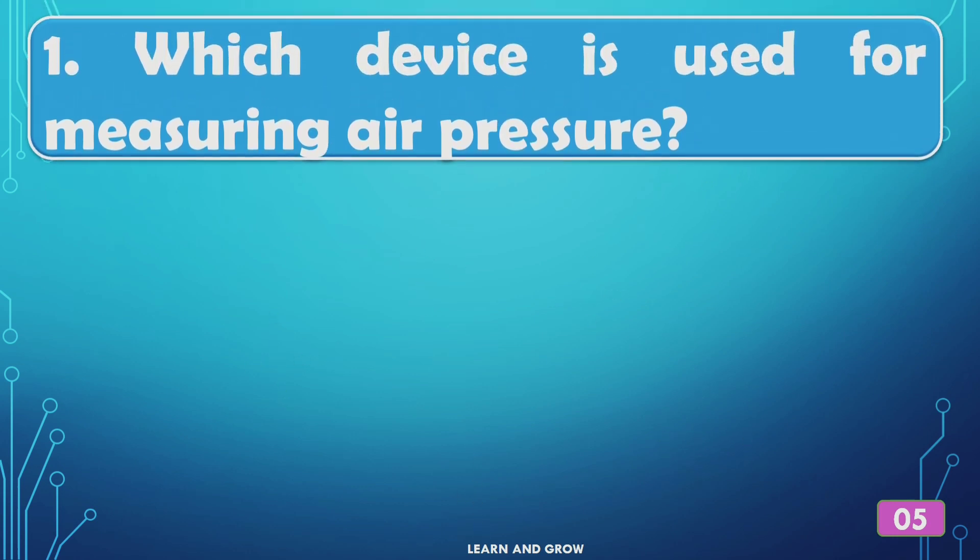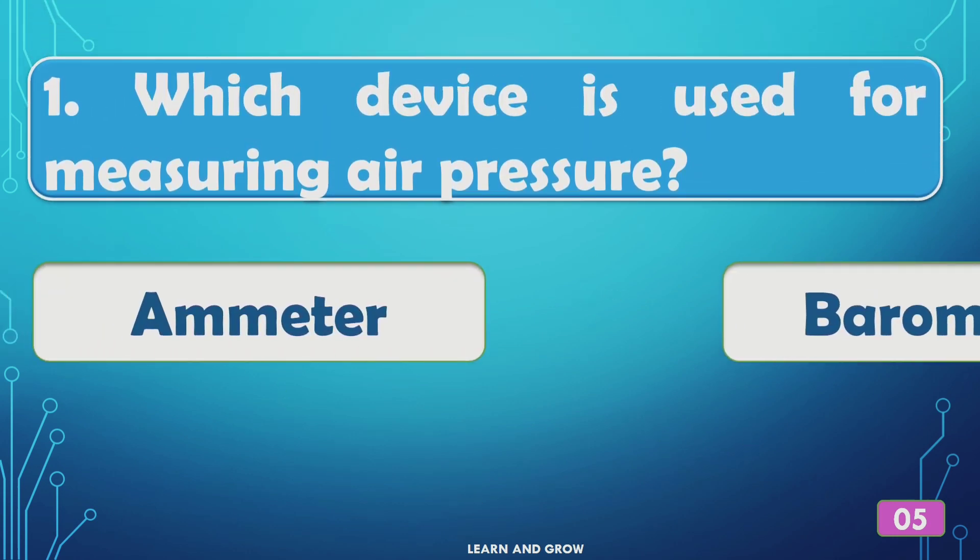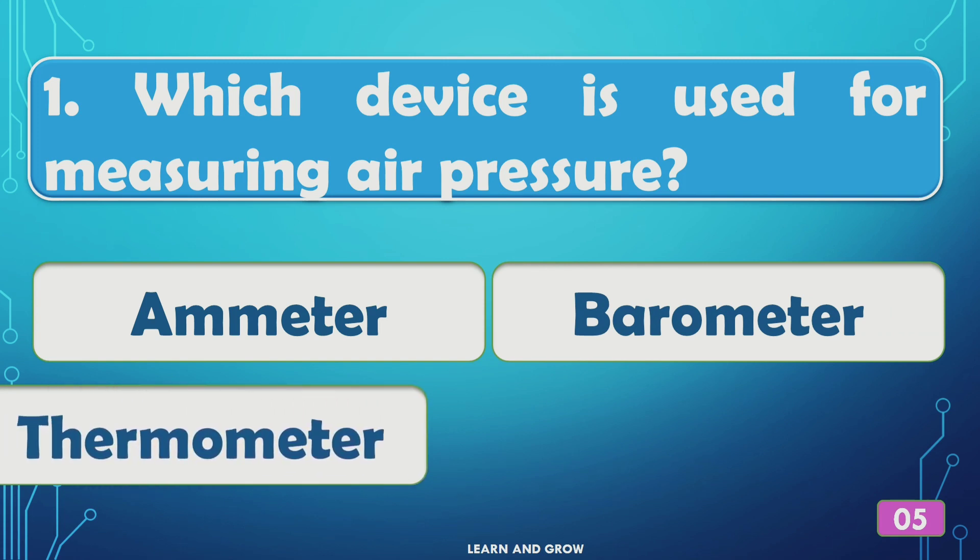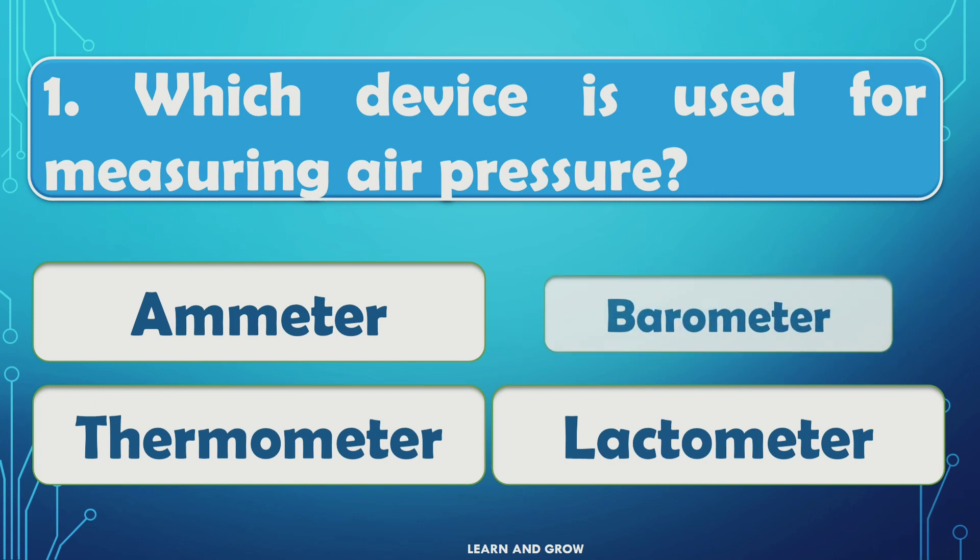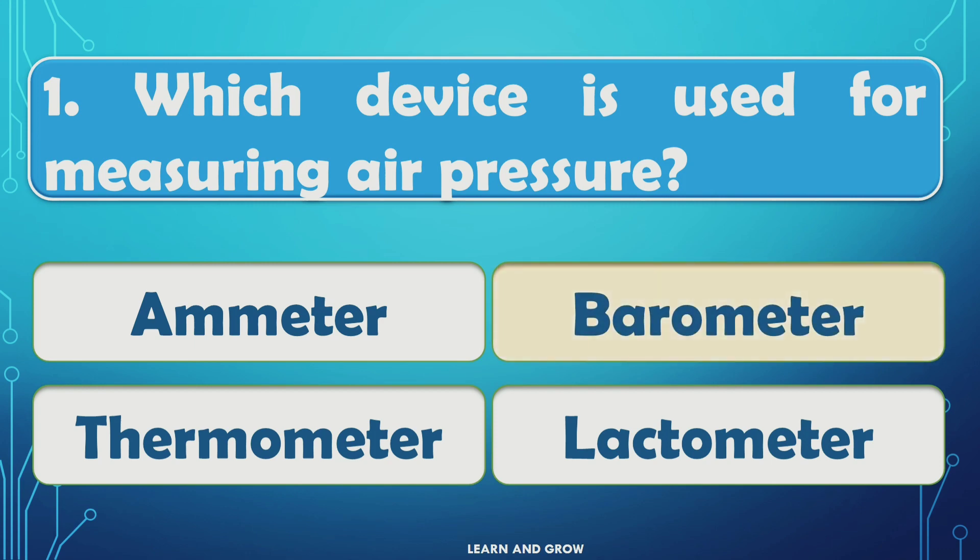Which device is used for measuring air pressure? The right answer is option B, barometer.